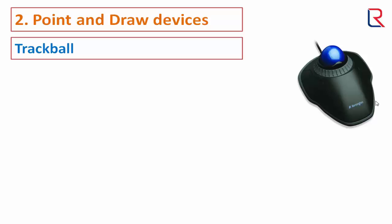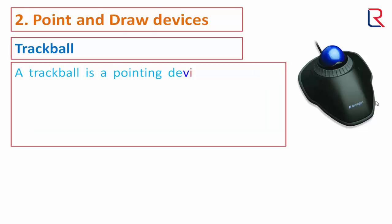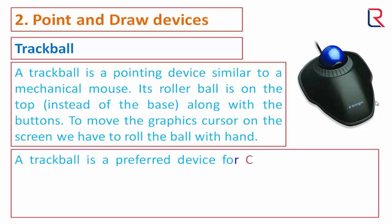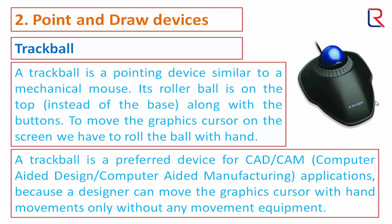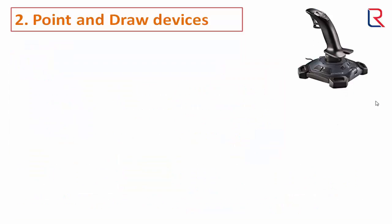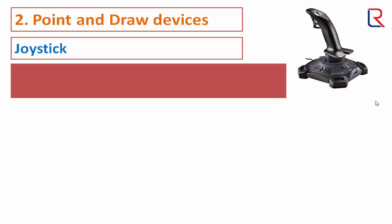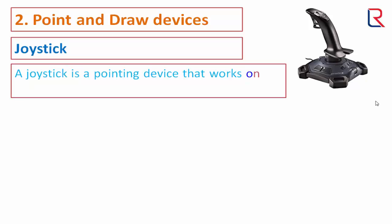Trackball: a trackball is a pointing device similar to a mechanical mouse. Its roller ball is on the top along with the buttons. To move the graphics cursor on the screen, the user rolls the ball with their hand. A trackball is a preferred device for CAD/CAM applications because a designer can move the graphics cursor with hand movements only, without moving the entire device.